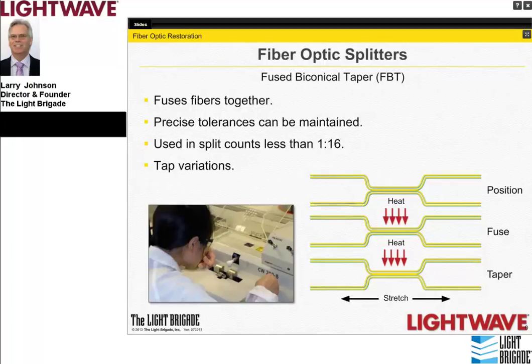FBT splitters are practical up to split counts of around 1×16. You can cascade them easily: a 1×2 followed by two 1×16s gives a 1×32. Star splitter configurations such as 16×16 are also possible. Many variations and options are available for manufacturing FBT splitters.